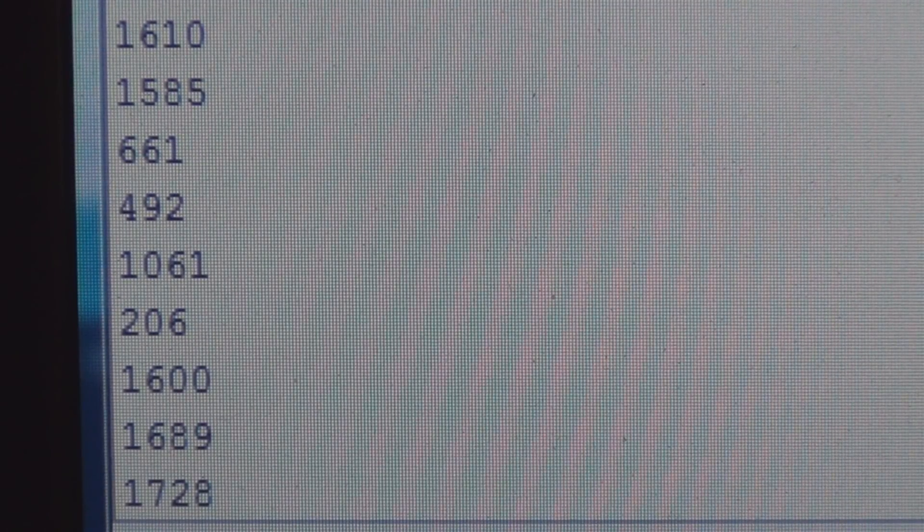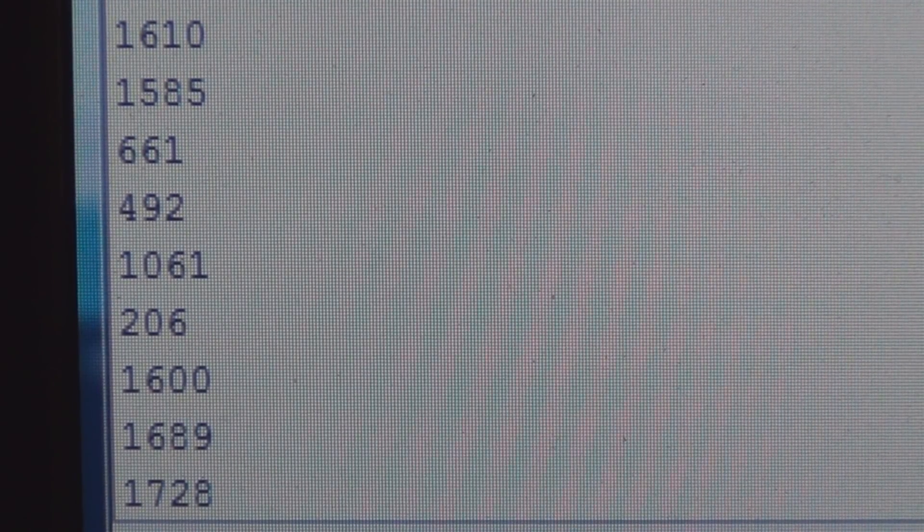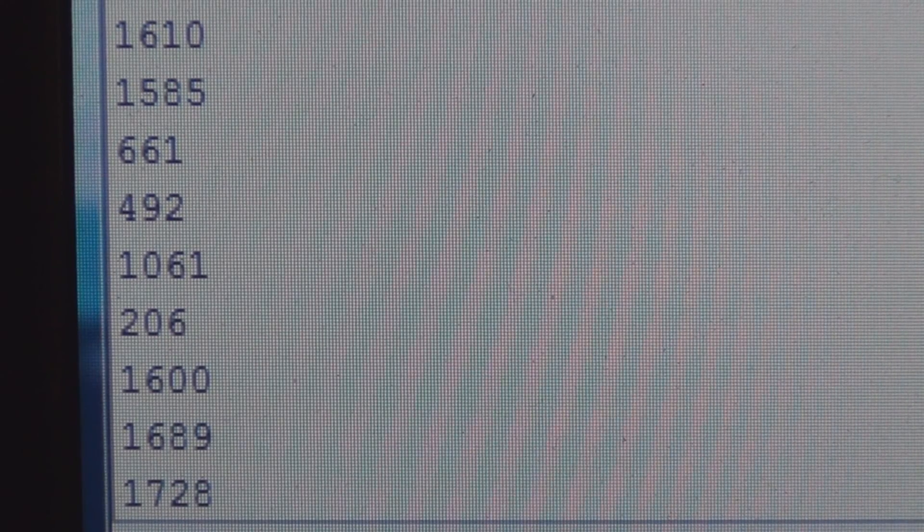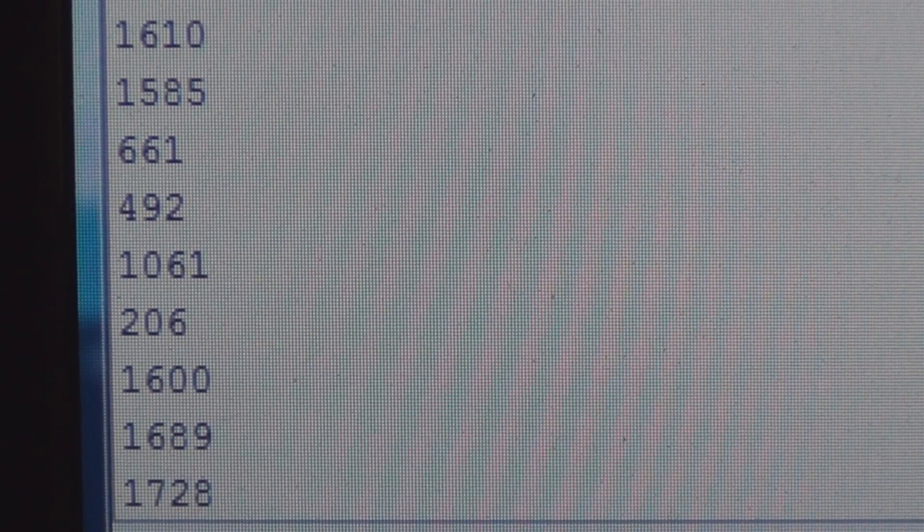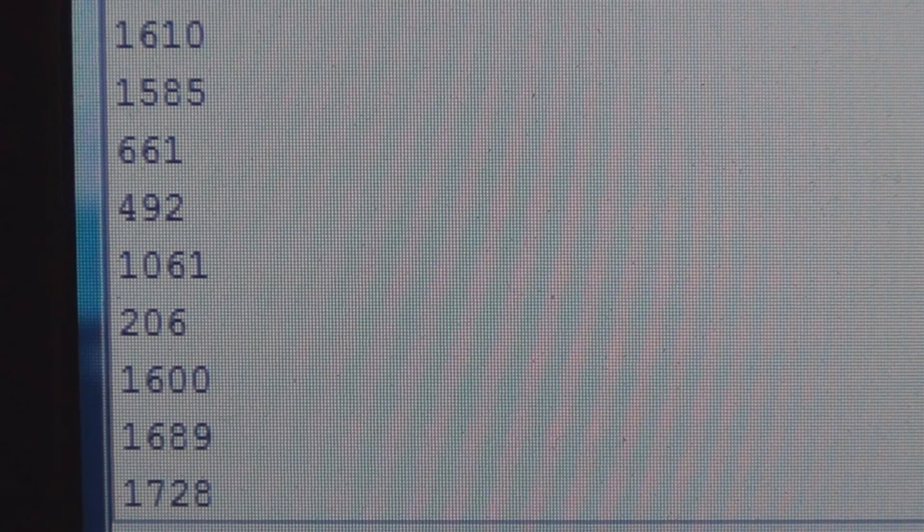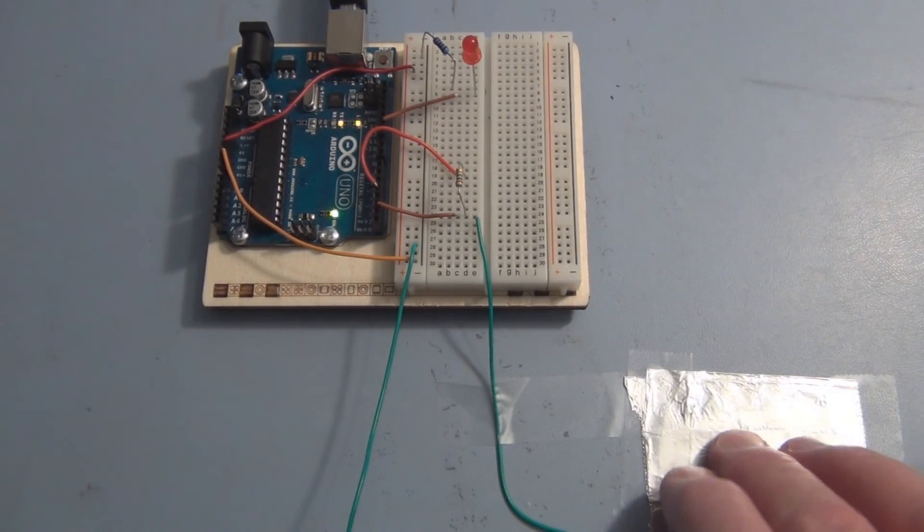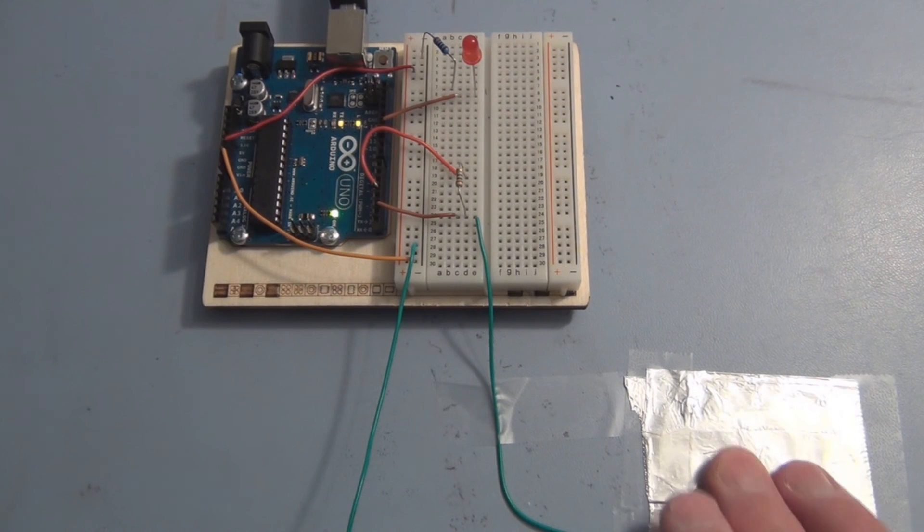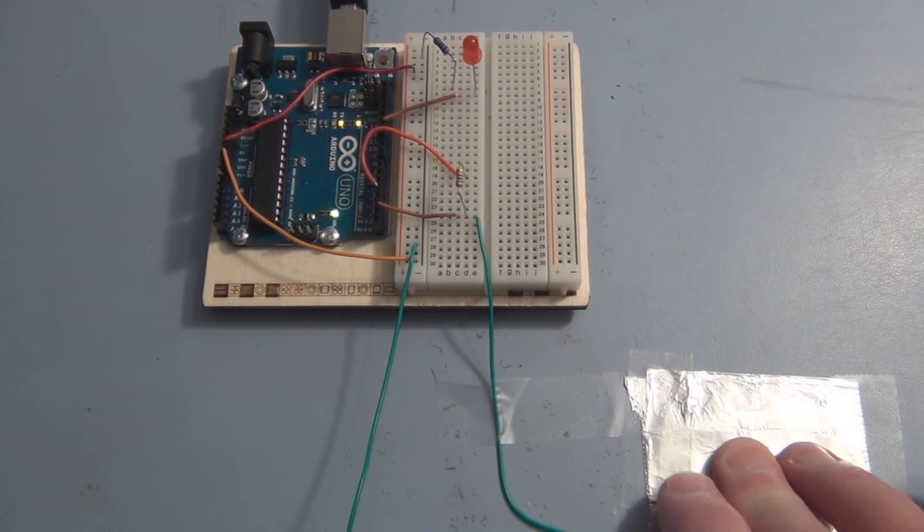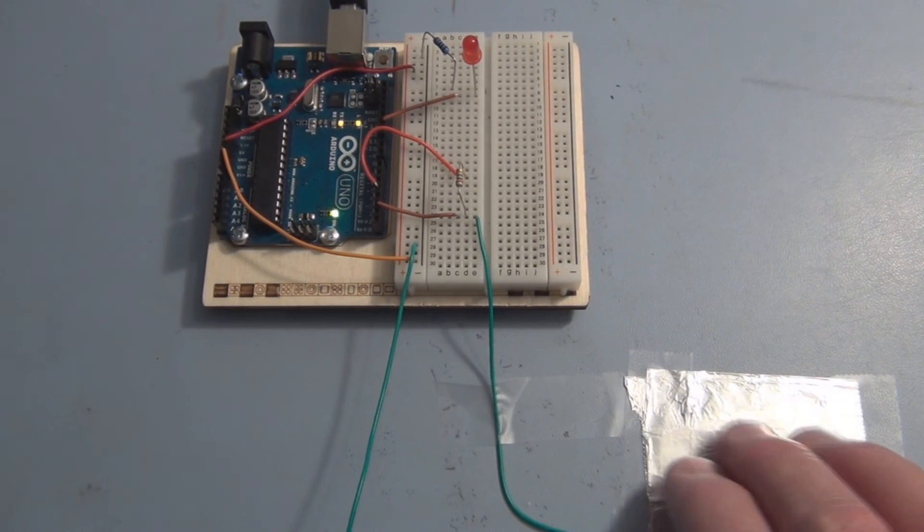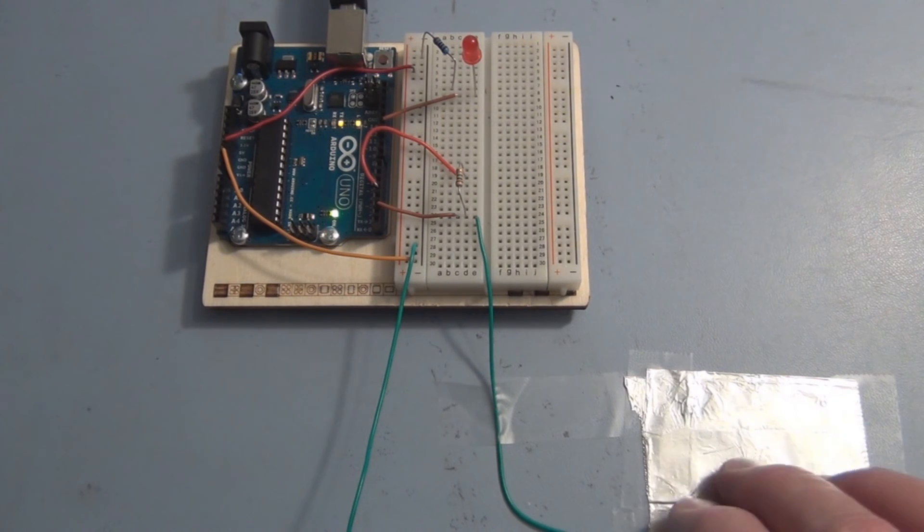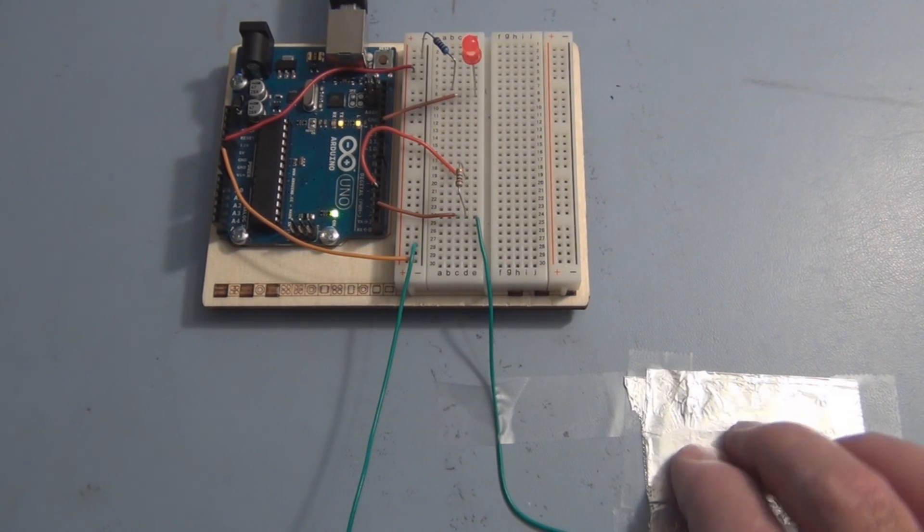So you can see the range of numbers that you're getting, that I'm getting: 1610, 1585. So it's just another example of how the Arduino can be used to react or bring in some sensor data, and then we can manipulate that data and have the Arduino activate whatever circuits we want to activate based on the input that it's getting from whatever sensors we hook up to it.